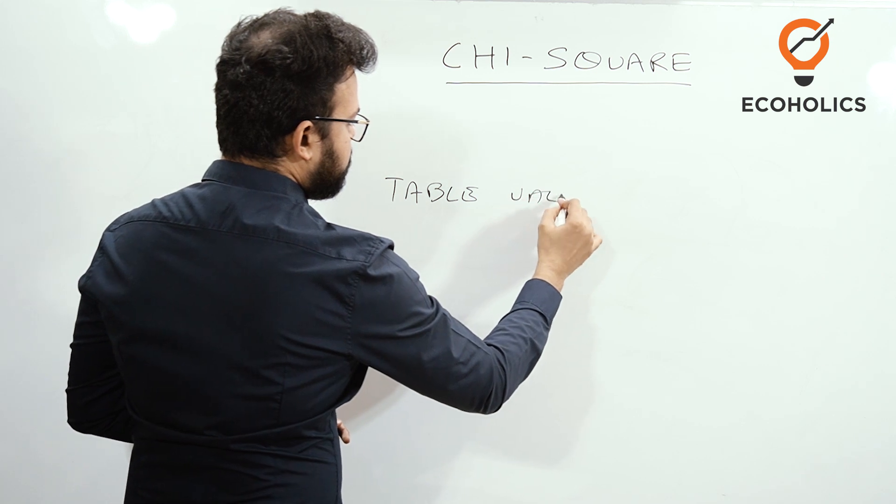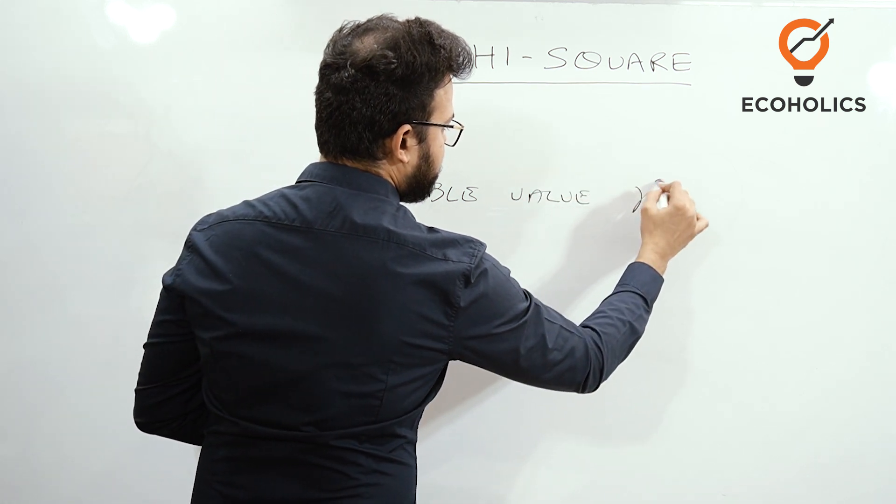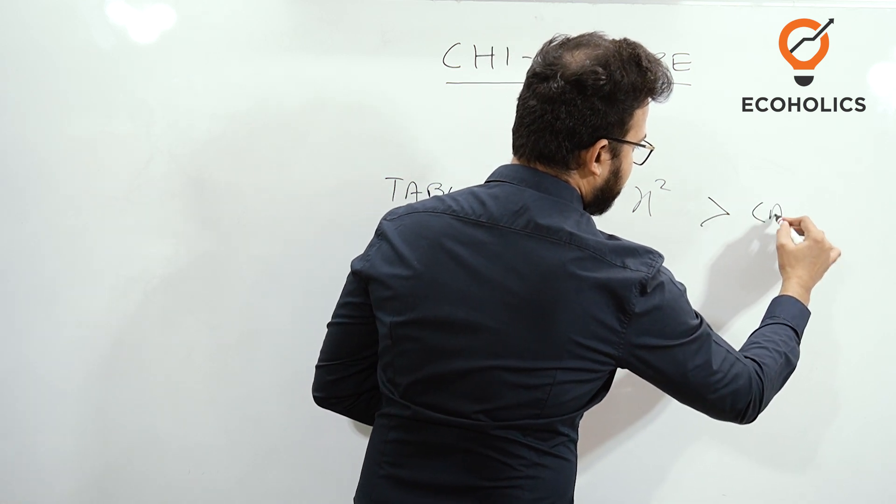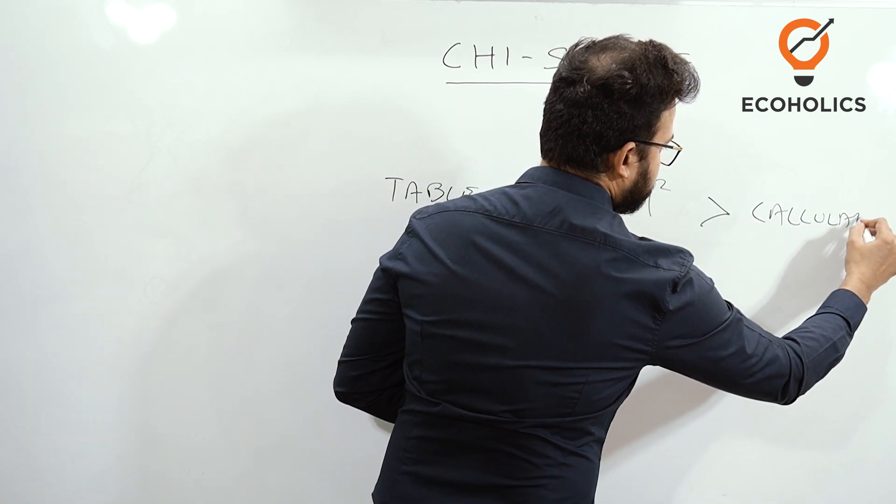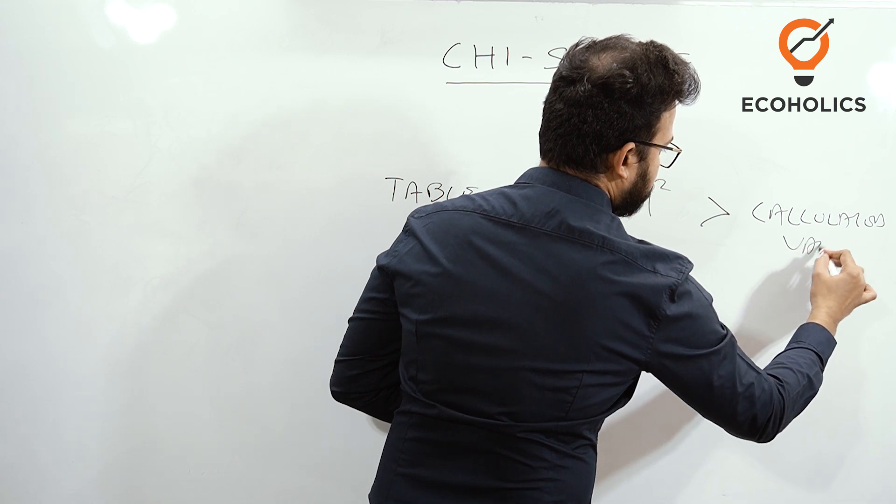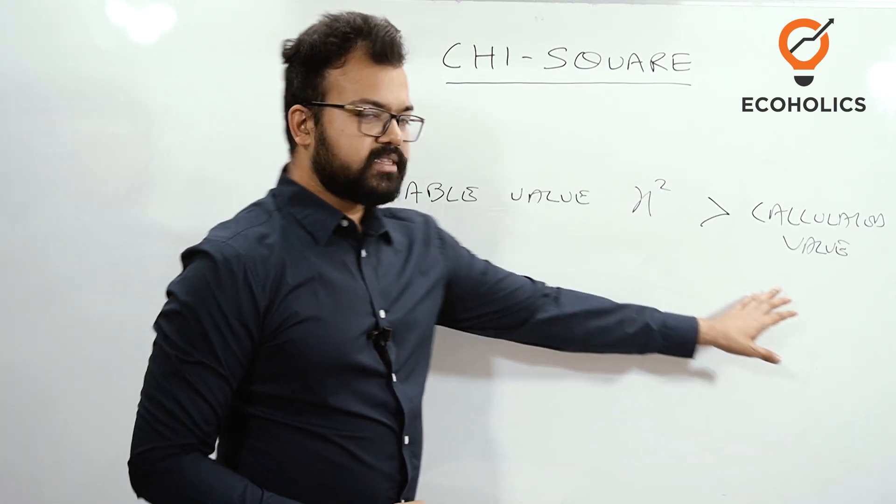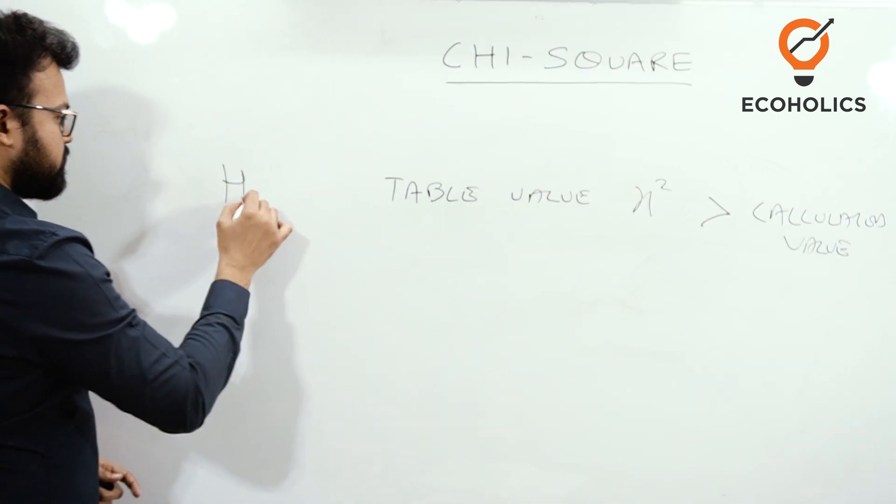When the table value of chi-square is greater than the calculated value, what do we do with the null hypothesis? We accept it.